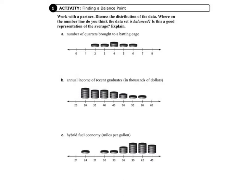So let's look at letter A, and we're going to talk about the balance. So we have a number of quarters brought to a batting cage. And we want to think of the number line as like a seesaw or a scale.